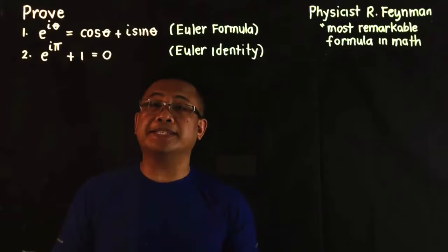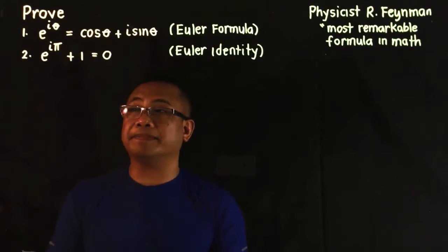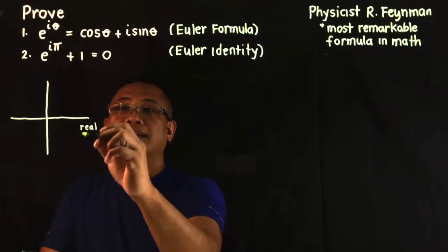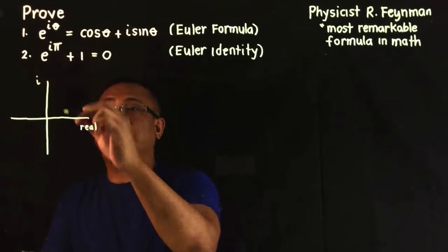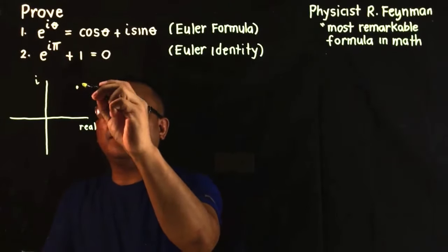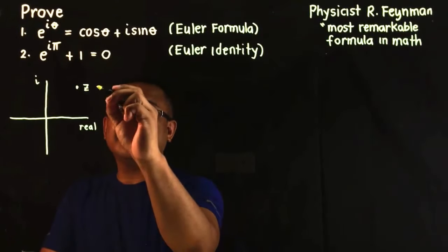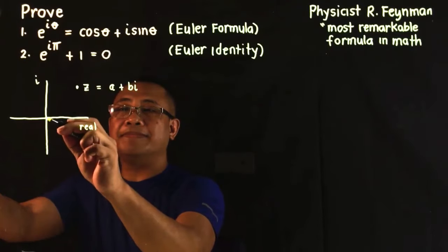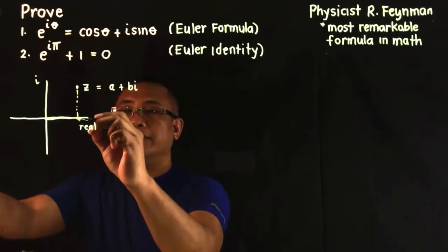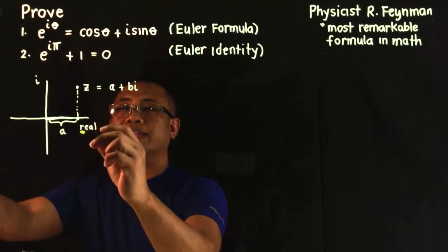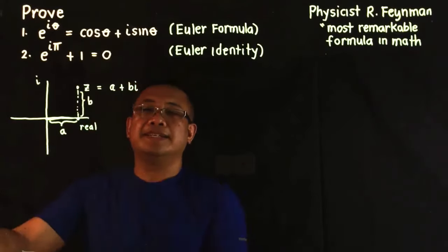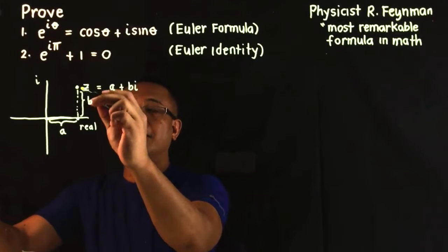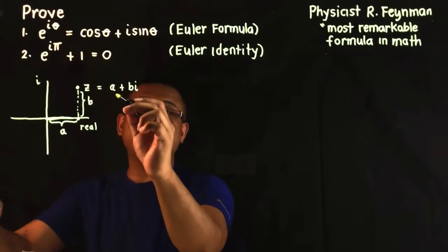Let's begin by recalling how to represent a complex number in the complex plane. We draw a Gaussian plane where the horizontal axis represents the real numbers and the vertical axis represents the imaginary numbers. Any point Z on this complex plane is represented as Z equals A plus Bi, where A is the horizontal distance and B is the vertical distance along the imaginary axis.